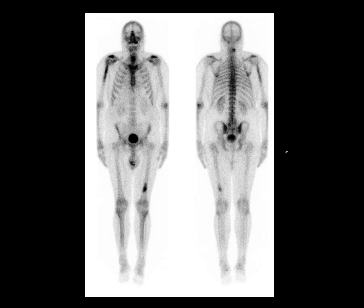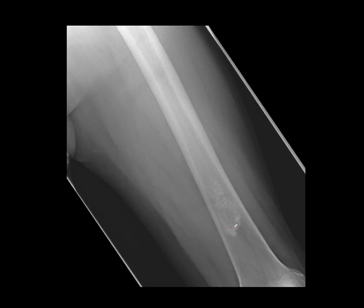Let's have a look at another one which is rather similar. This one is perhaps a bit more concerning because there are two of them. You can see some facet degenerative change and some lumbosacral degenerative change. There's a rather linear, quite large area of increased activity in the right proximal humerus and in the left distal femur. We did take radiographs of these areas — I'm not sure if this is a bone infarction or some sort of cartilaginous matrix, but it's certainly consistent with an enchondroma.